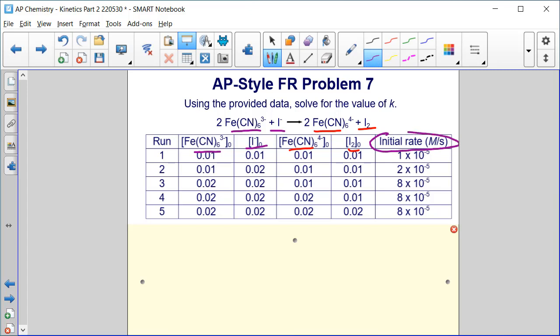The first step in determining K is to use the experimental data from these five trial runs to determine what order each of the reactants is and then write the rate law.